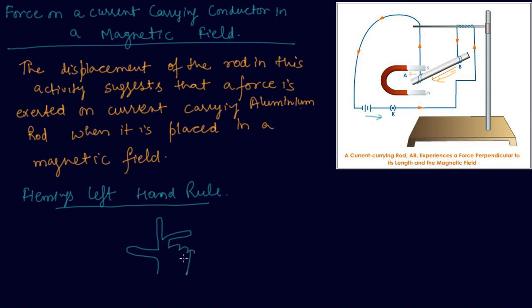It is shown like this. The thumb is like motion, it is field, magnetic field, and it is current. Means all the three fingers are perpendicular to each other.